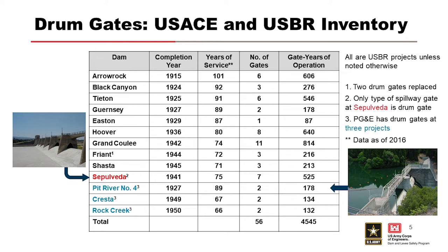Here's a list of the drum gates in the inventory of USACE and USBR. We compiled all the gate years of operation — this is from 2016. In 2016, we had 4,500 gate years of operation. Since we had essentially two failure modes, we can use the gate years of operation and the number of failures to come up with a very rough annualized probability of failure. This is kind of what we do on some of these unique gates — we're looking at inadvertent lowering, an uncontrolled release of pool downstream, using historical data as a starting point.